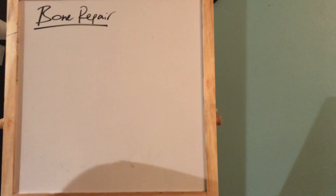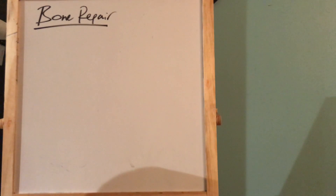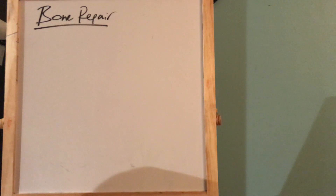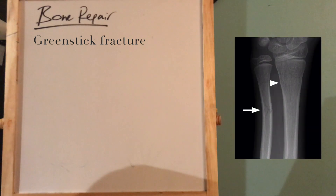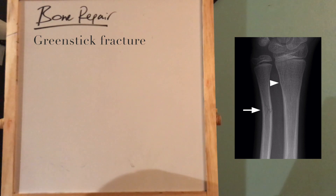Today I'd like to talk a little bit about how bones break and how they repair themselves after a break. We all know that bones break and they can break in a couple of different ways. One type of break is called a greenstick fracture. This is when there's only a partial break and the break doesn't go all the way through the bone — it breaks just like a small living twig on a tree would break. These are common in children because their bones are so flexible.